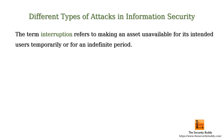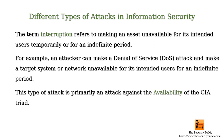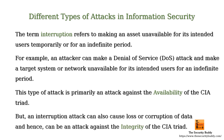This type of attack is primarily an attack against confidentiality and is challenging to detect. Interruption refers to making an asset unavailable for its intended users temporarily or for an indefinite period. For example, an attacker can make a denial of service attack and make a target system or network unavailable for its intended users. This type of attack is primarily an attack against availability, but an interruption attack can also cause loss or corruption of data and hence can be an attack against the integrity of the CIA triad.